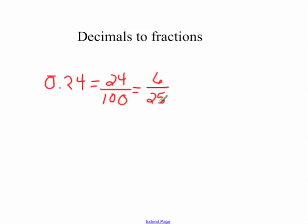Another example would be the decimal 17 thousandths. 17 thousandths as a decimal looks like this, and as a fraction it's 17 divided by 1000.